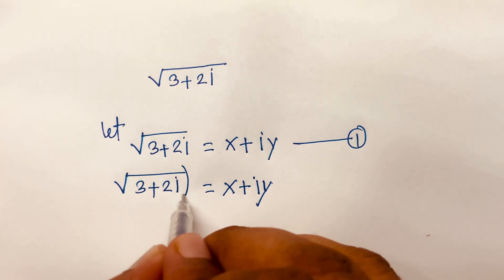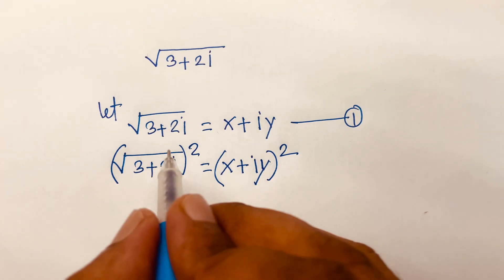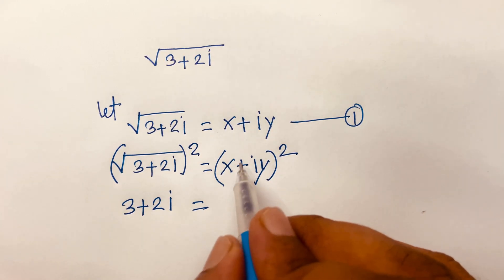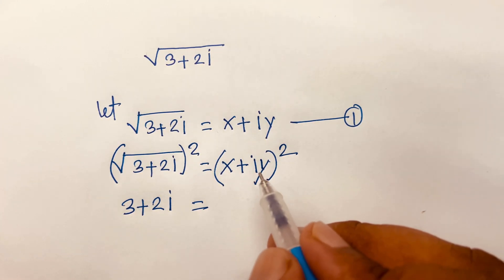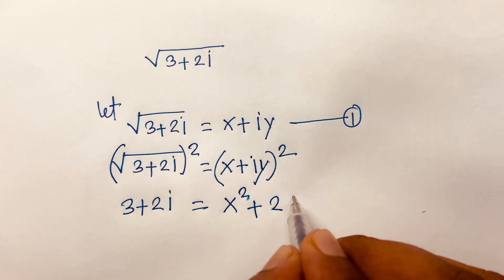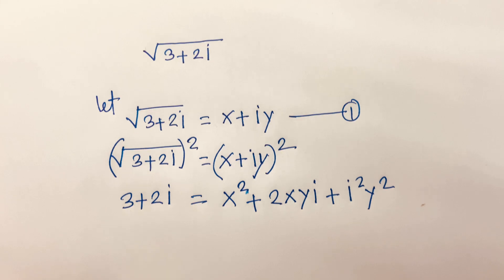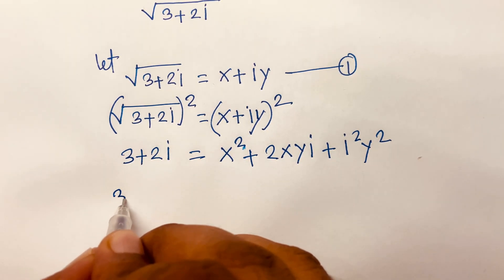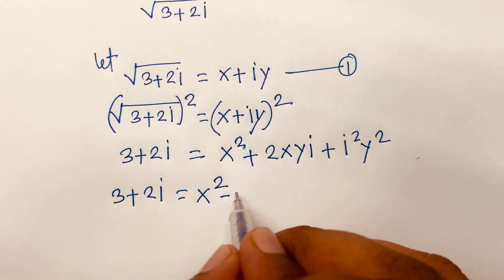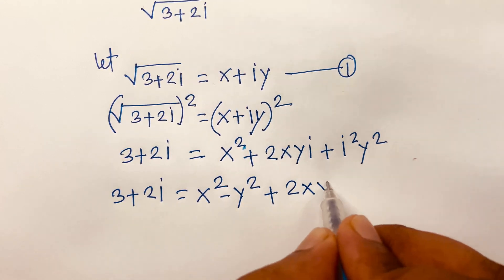I use the binomial whole square formula. The square root is cancelled, so we find 3 plus 2i is equal to (a+b)² expanded as a² plus 2ab plus b². According to this, we get x² plus 2xy·i plus i²y², and since i² equals minus 1, this becomes x² minus y² plus 2xyi.